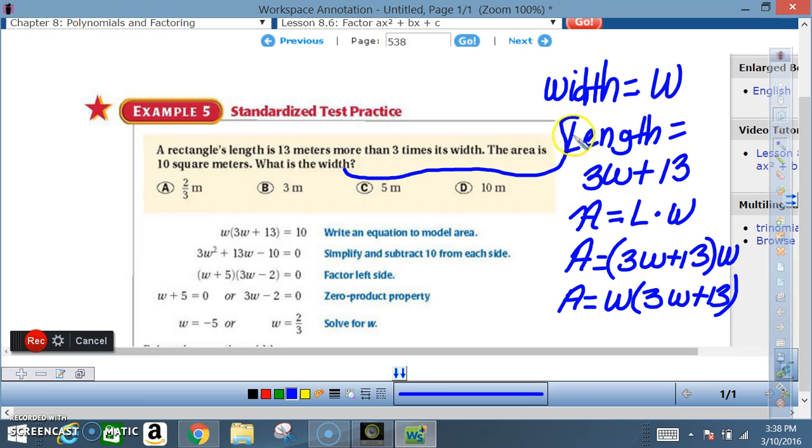what the length is. They said the length is 13 more than three times the width, so three times w plus 13. And we know that the area of a rectangle is area equals length times width. Well...